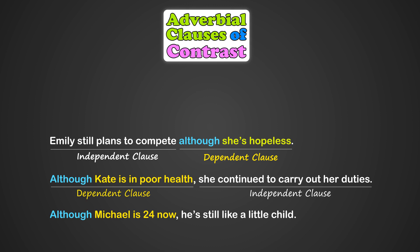'Although Michael is 24 now, he is still like a little child.' Here again, the dependent clause 'although Michael is 24 now' is in contrast with the independent clause 'he is still like a little child,' because a 24-year-old guy is an adult. So he is expected to act like a man, not a child.